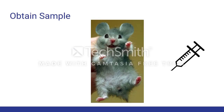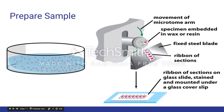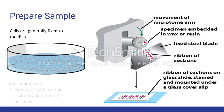The first thing you do when starting the procedure is obtain a sample. When performing immunofluorescence, you can use either cells or dissected tissue. In order to prepare the sample, the cells or tissues must be fixed to the dish, which is generally done by using formaldehyde. Next, the fixated cells or tissues are taken to a microtome, where they are cut into thin sections and mounted onto slides.